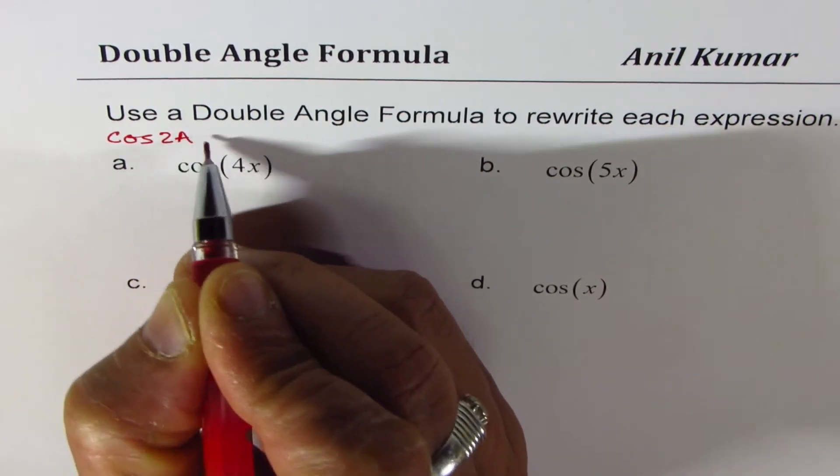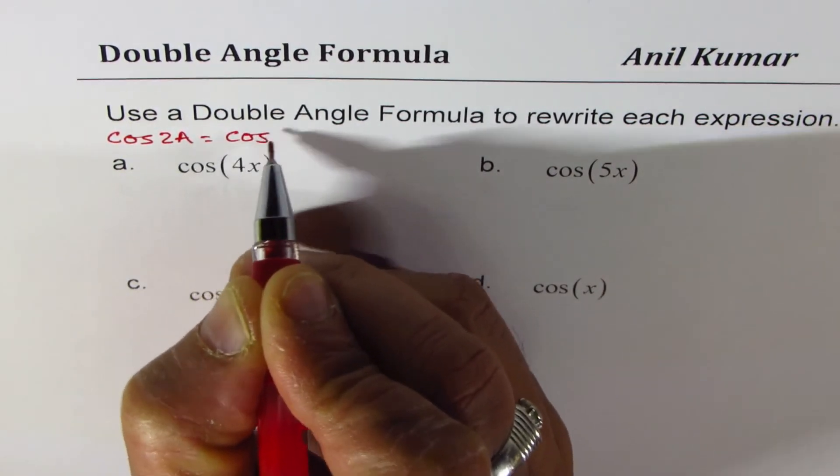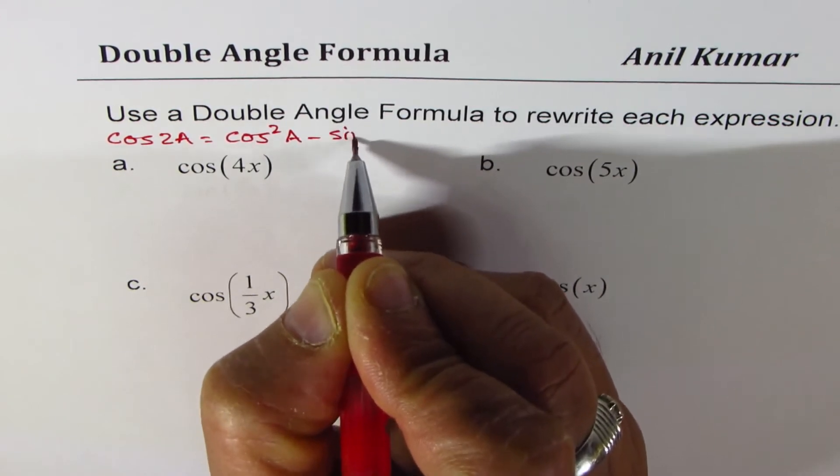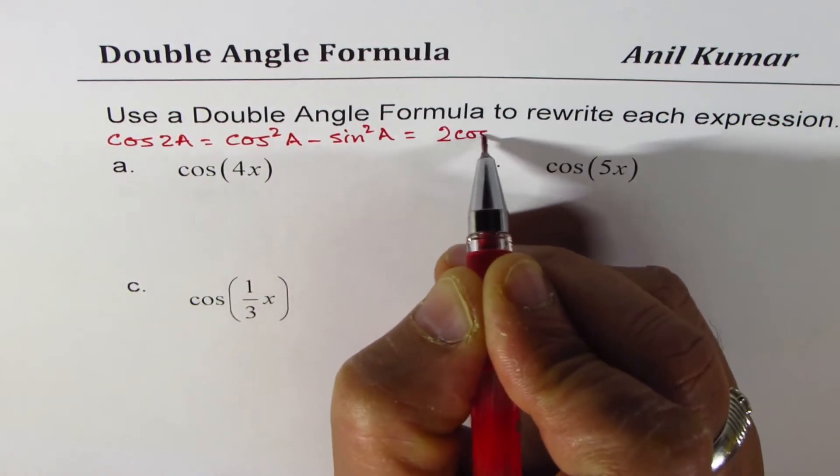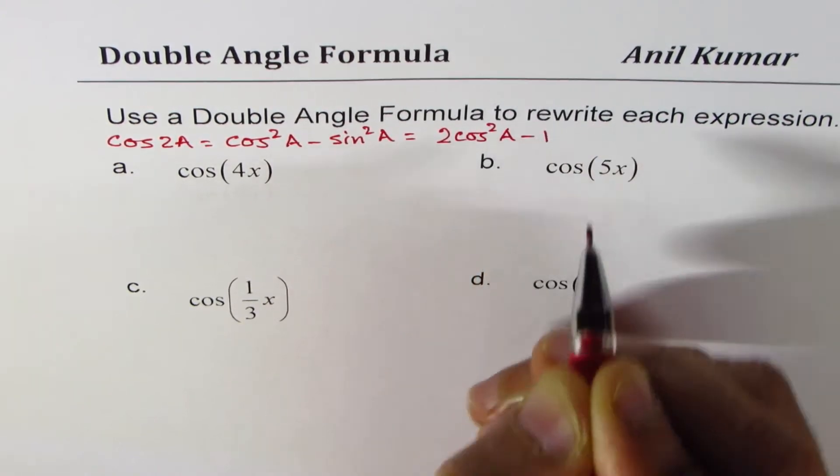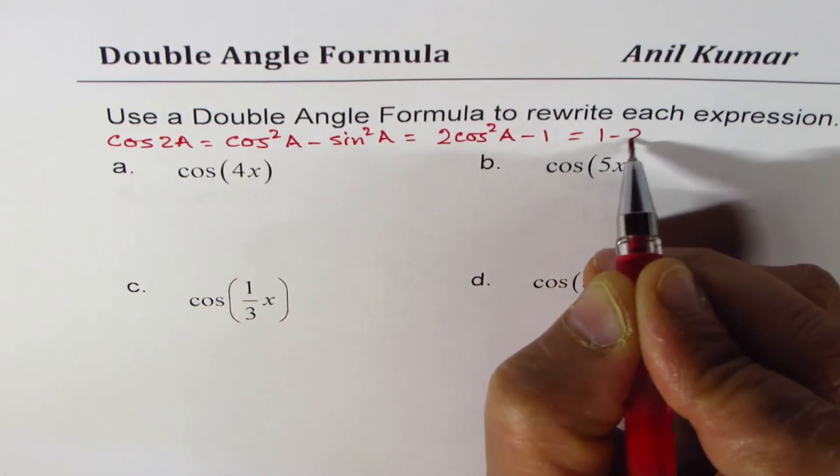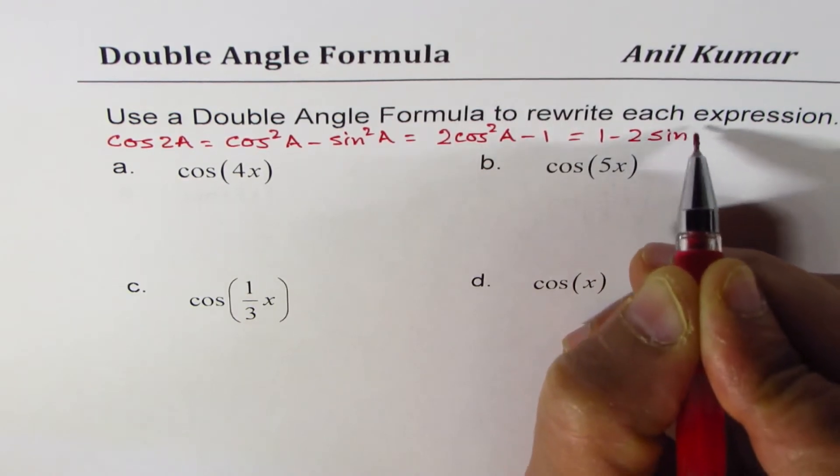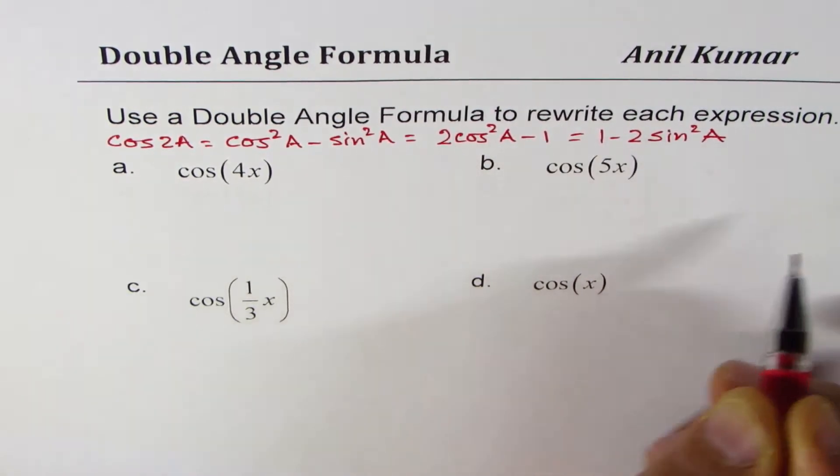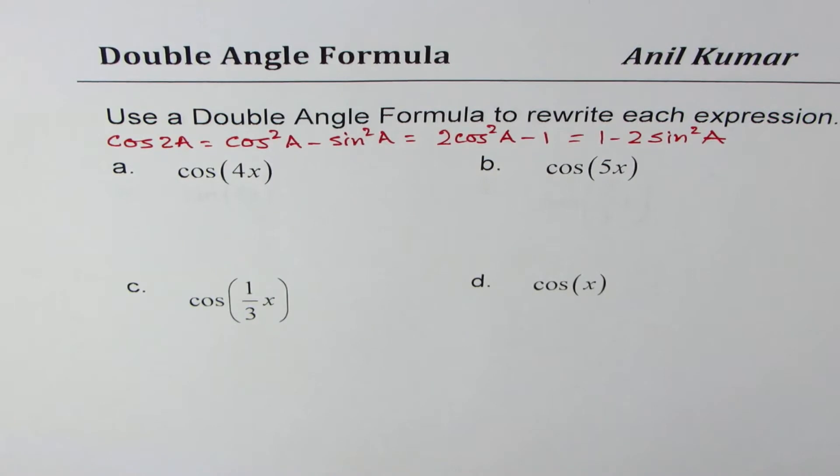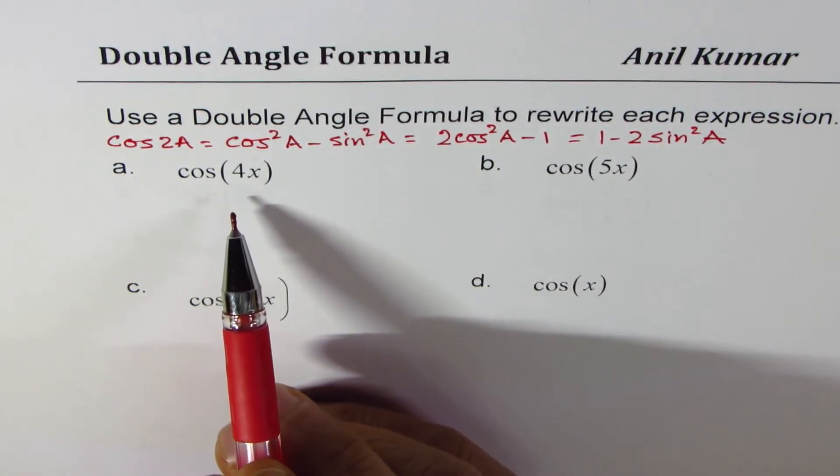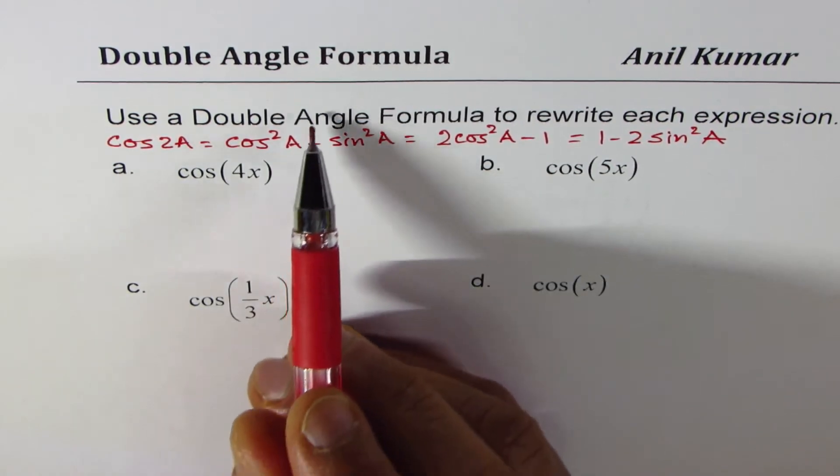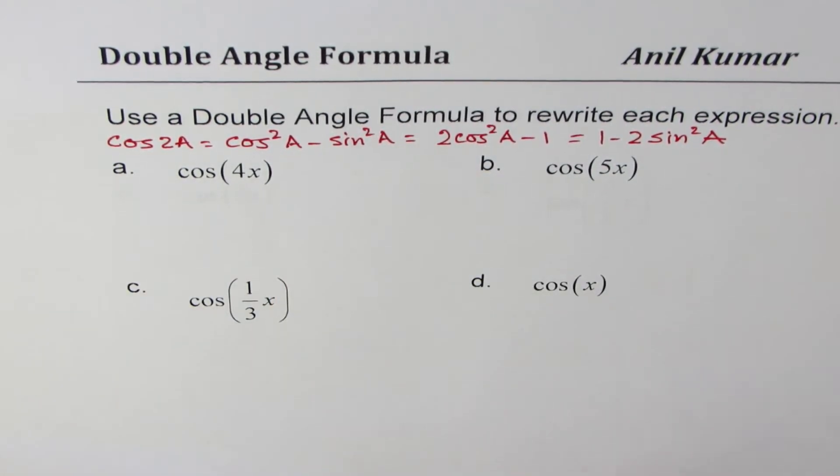cos 2a could be written as cos square a minus sine square a, which is also equals to 2 times cos square a minus 1, and that is also equal to 1 minus 2 sine square a. So we can apply any of these formulas when we rewrite the given expressions using double-angle formulas. So we'll try to use them in these examples.